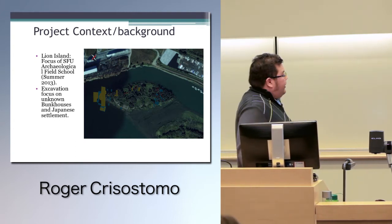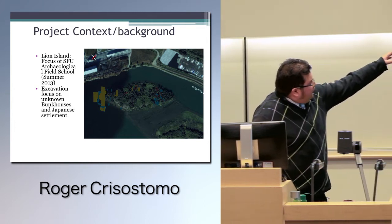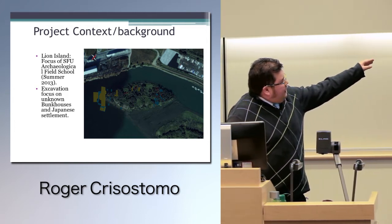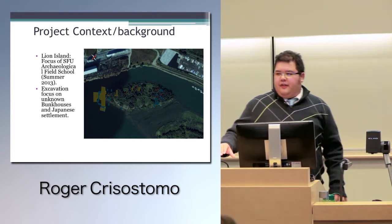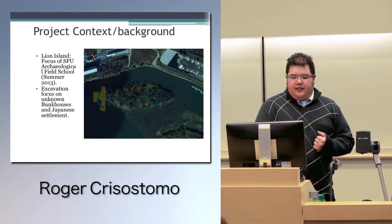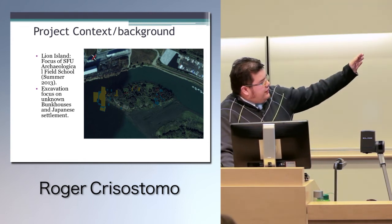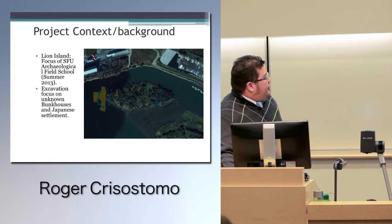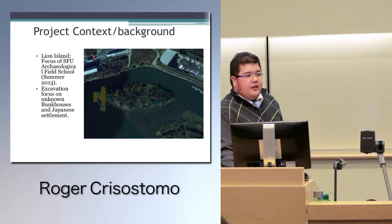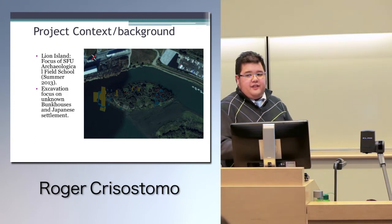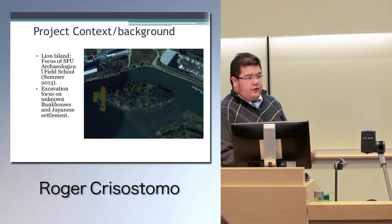The island itself has what's known as Ewan Cannery, which is that large yellow structure on the western tip. This was part of the huge salmon harvesting industry along the Fraser River in the Lower Mainland. Off to the east are the Japanese settlements and the unknown bunkhouses. Those are mainly the focus of our excavation for the field school, because we want to focus on the daily living and artifact assemblages of those who actually lived on the island.